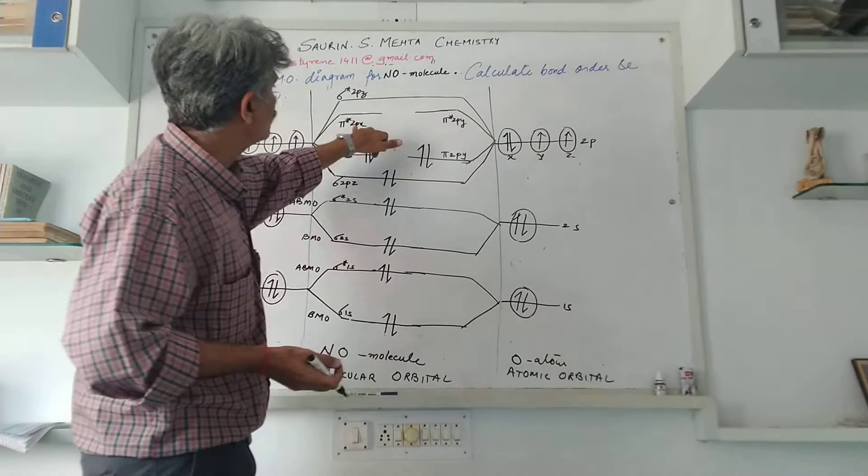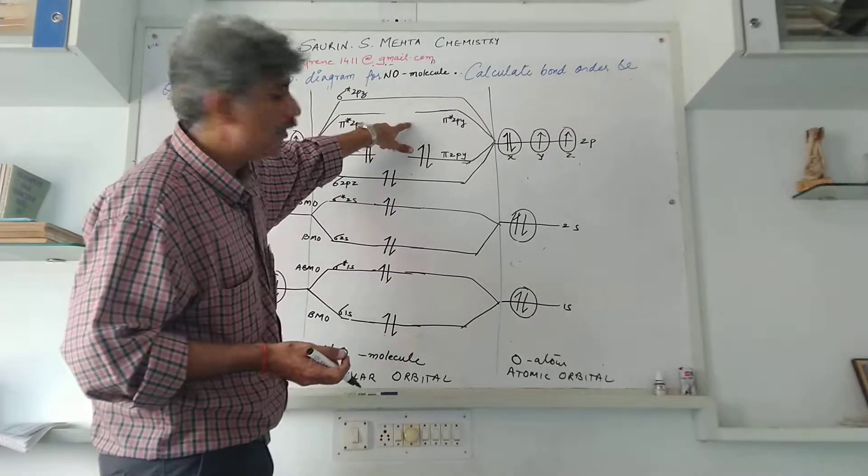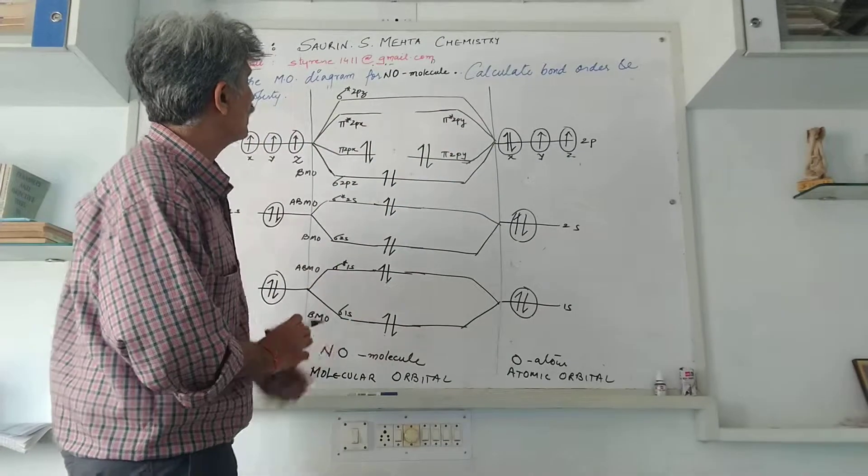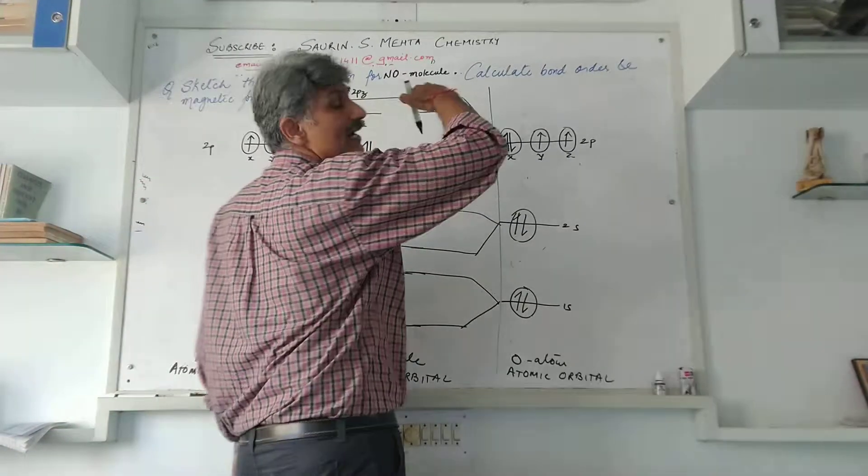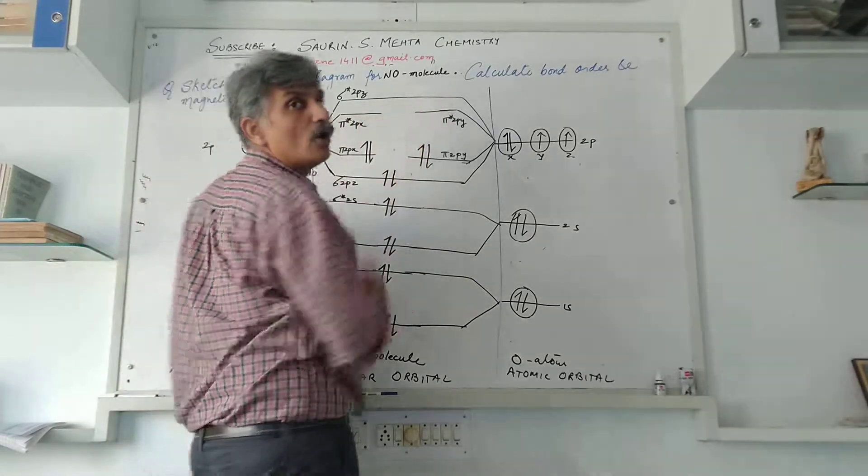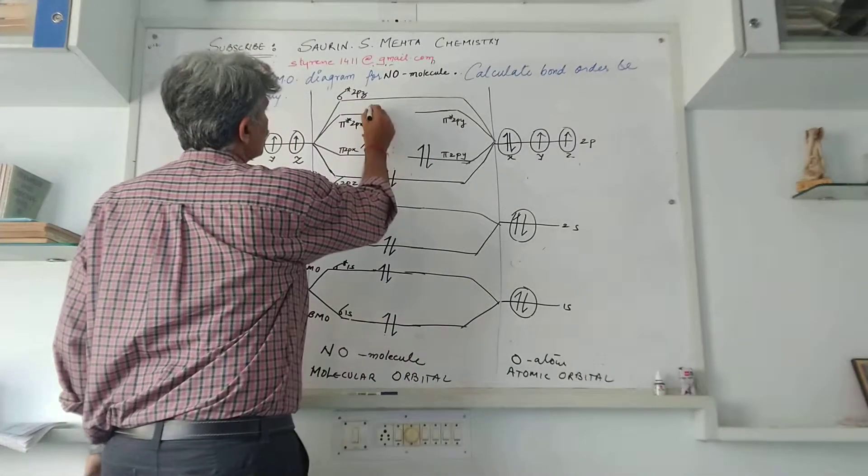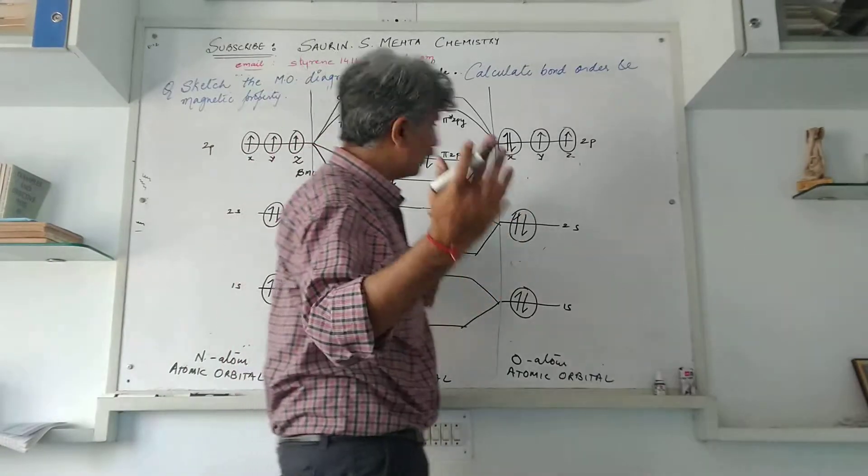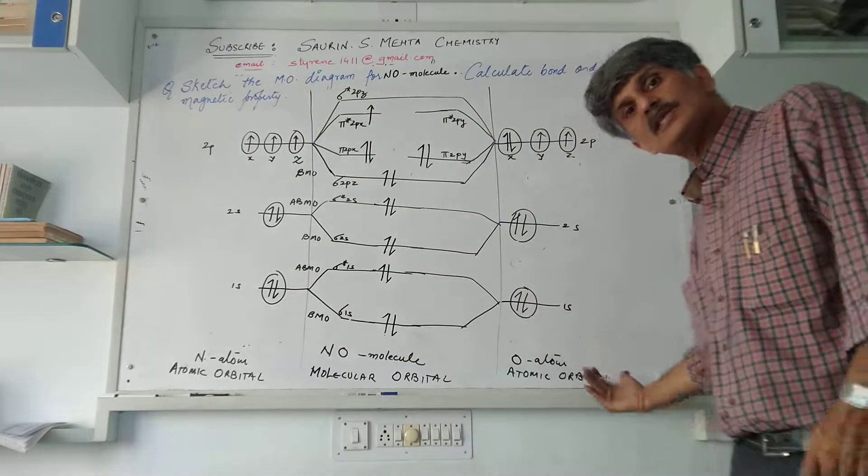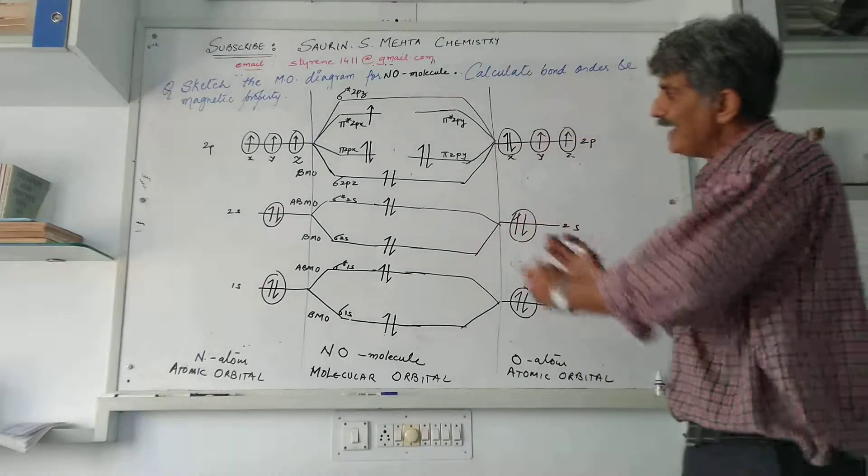But as far as oxygen atom 2p orbital is concerned, one electron is yet to be filled up. Now we have got the higher energy ABMO, that is pi star 2px and pi star 2py. You can have two options open because they are equi-energetic, so you can either fill up in pi star 2px or pi star 2py. Let us fill up the electron in pi star 2px and now no more electron is left as far as the nitrogen atom and oxygen atom are concerned. And so that is the end of filling up of electrons.